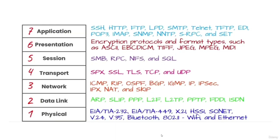Internet Control Message Protocol, or ICMP, is a helper protocol that assists Layer 3. ICMP is used to troubleshoot and report error conditions. Without ICMP, IP would fail when faced with routing loops, ports, hosts, or networks that are down. ICMP has no concept of ports as TCP and UDP do, but instead uses types and codes.